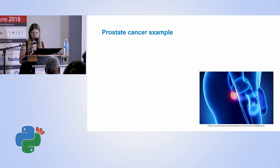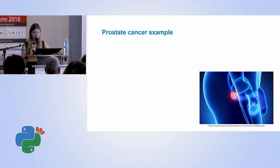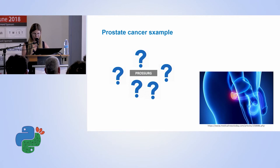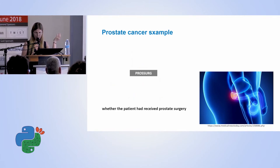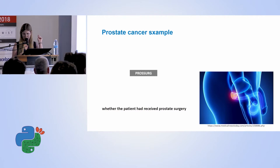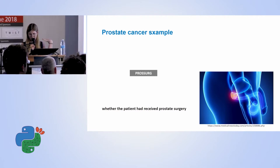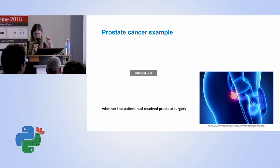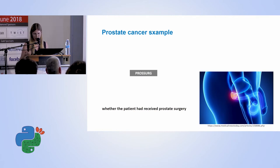Here is another example of data leakage — this time about prostate cancer. There was a competition to predict prostate cancer in patients, and hidden among hundreds of features was one feature whose meaning was not clear. Eventually, it turned out this feature actually indicates whether the patient had prostate cancer surgery. This feature was very correlated and very predictive for the target. So actually, this feature is not legitimate to use in the model — this is data leakage. This type is leakage in features, because this feature won't be available to the model in real life: when you are doing diagnosis, the patient hasn't had the surgery yet.